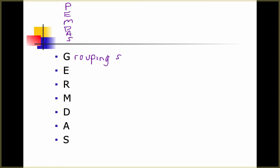It's important to know what the grouping symbols are, and that we do groups first. Some of the grouping symbols you're going to see this year include the square root of x plus 5 — that's a grouping symbol. When you have a division bar with something over something else, the division bar is a grouping symbol. It's not just parentheses anymore; there are other grouping symbols we'll be working with.